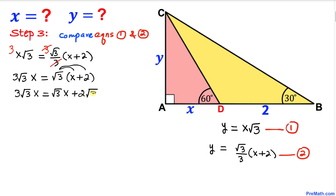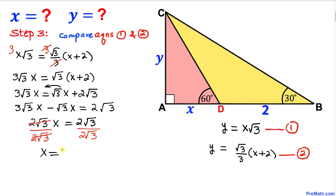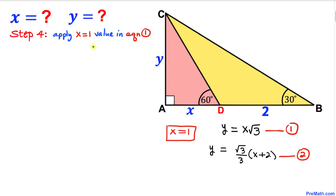Moving the square root of 3 times X to the left-hand side, we get 3 times square root of 3 times X minus square root of 3 times X equals 2 times square root of 3. This simplifies to 2 times square root of 3 times X equals 2 times square root of 3. Dividing both sides by 2 times square root of 3, we get X equals 1.